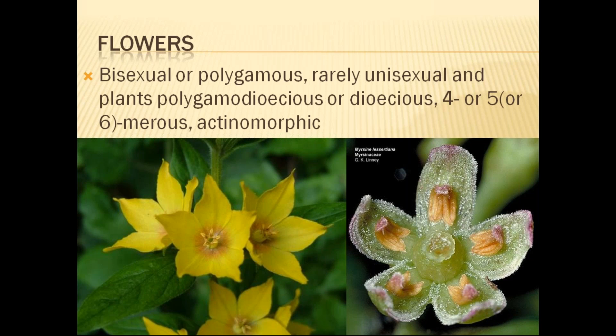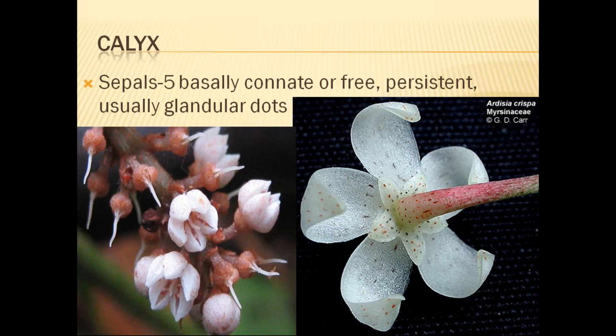The calyx has five sepals. They are basally connate or free, persistent, and usually glandular dotted. You can see the calyx in photographs where we are getting some dots present on the calyx, and somewhat on the pedicel also. The glandular dots on the sepals, which are also present on the pedicel and inflorescence peduncle, are a very particular characteristic to identify this family.